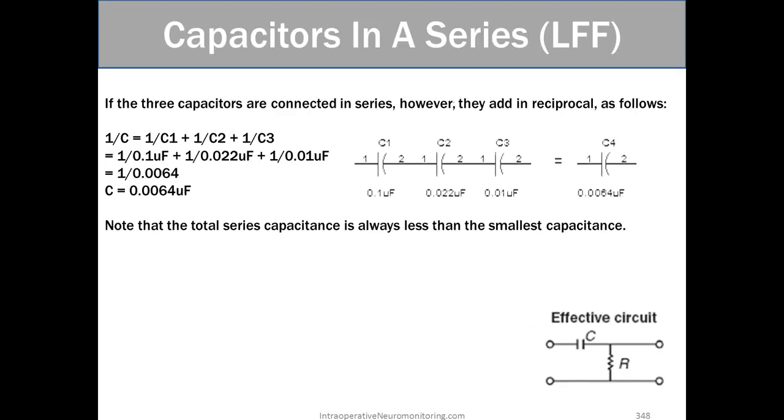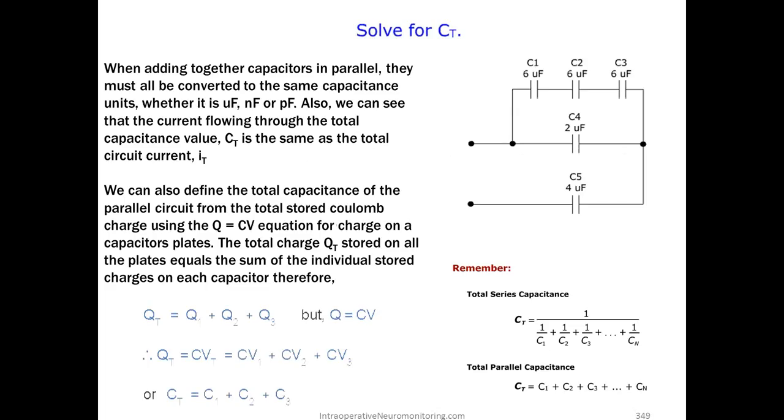And then for low frequency filters, if three capacitors are connected in series, however, they add in reciprocals. So again, the same equations, just opposite of the resistance. When adding together capacitors in parallel, they must all be converted to the same capacitance units, whether it is UF or nanoFs or PFs. Also, we can see that the current flow through the total capacitance value CT is the same as the total circuit current IoT. We can also define the total capacitance of the parallel circuit from the total stored columns charged using the q equals cv equation for charge on the capacitor plates. The total charge, or qt, stored on all the plates equals the sum of the individual stored charges on each capacitor. So therefore, q total equals q1, 2, and 3, but q equals the cv. So if qt equals cvt equals cv1 plus 2 plus 3, or ct equals c123.